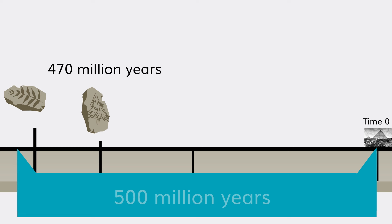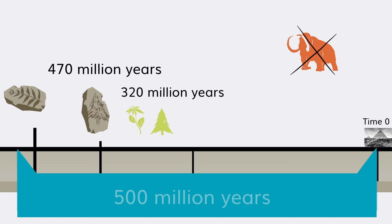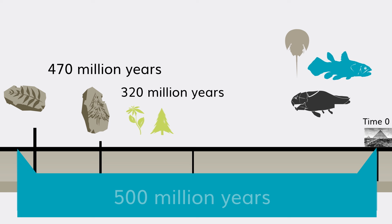If we zoom in on the last 500 million years, we think that seed plants — the large group that includes flowering plants and conifers — dates back to about 320 million years. To give some context, back then there were no mammals or birds yet, but terrestrial and aquatic animals were already quite diverse.